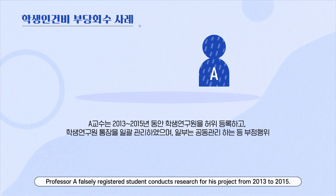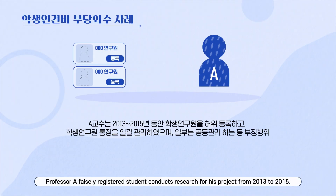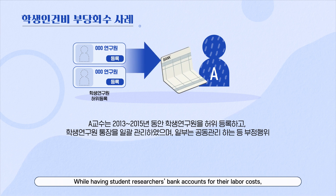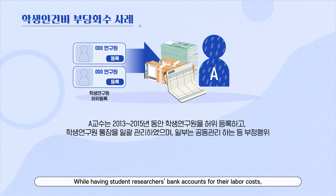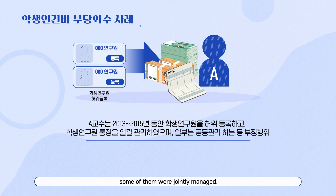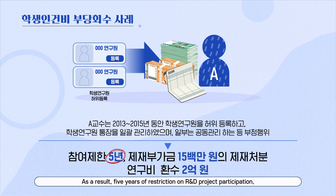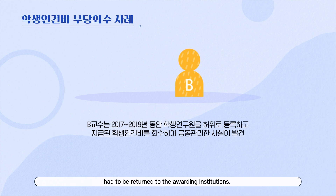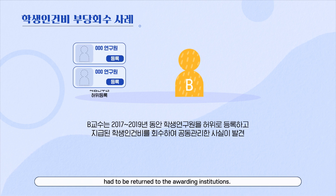Professor A falsely registered student conduct of research for his project from 2013 to 2015. While having student researchers' bank accounts for their labor costs, some of them were jointly managed. As a result, five years of restriction on R&D project participation, 15 million won in sanctions, and 6 million won of R&D funds had to be returned to the awarding institutions.